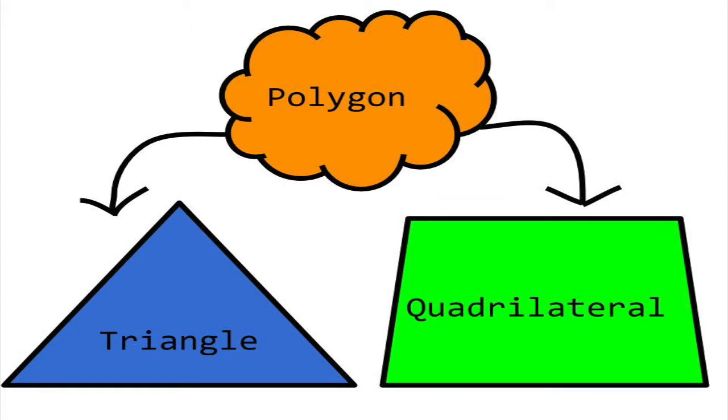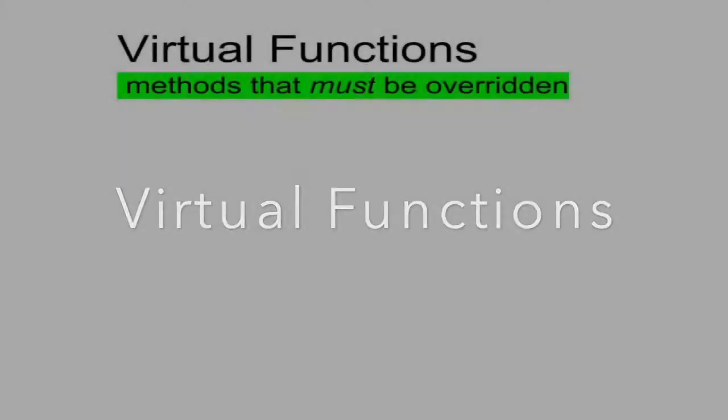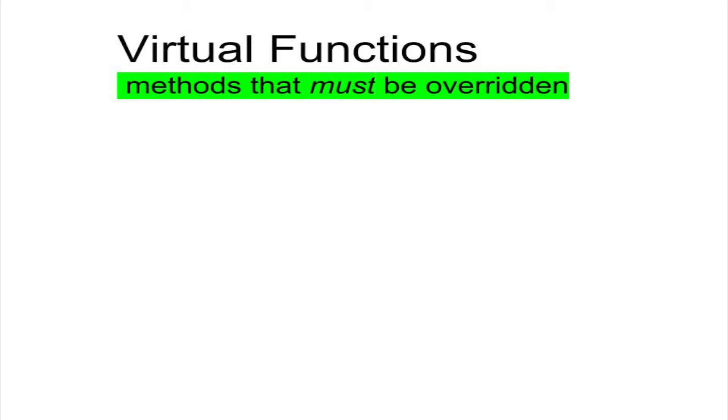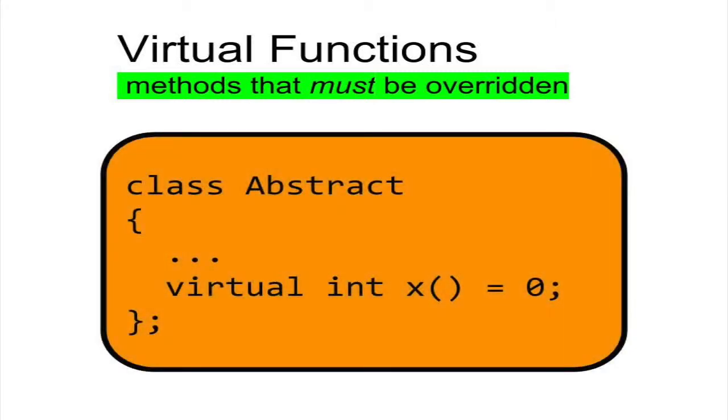In C++, an abstract class has at least one virtual function. A virtual function is a method in a base class that must be overridden by its derived classes. We declare the virtual function with the keyword virtual and set the function to equal zero.